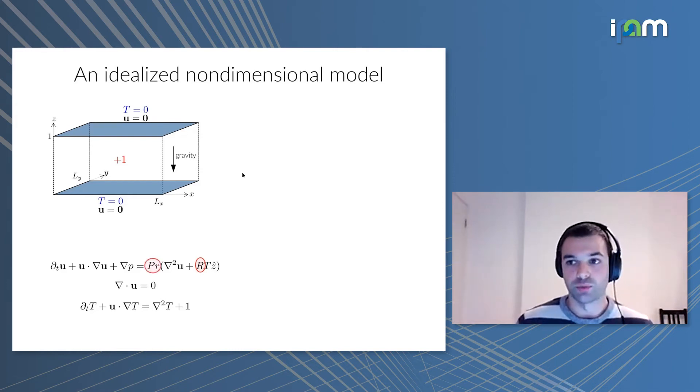Then we have the Prandtl number, which is how much momentum diffuses compared to heat. We also have the horizontal periods LX and LY of this box, which won't play a role in what follows. All the results I'll show will focus on the Rayleigh number R, and will be independent of the Prandtl number and horizontal periods.